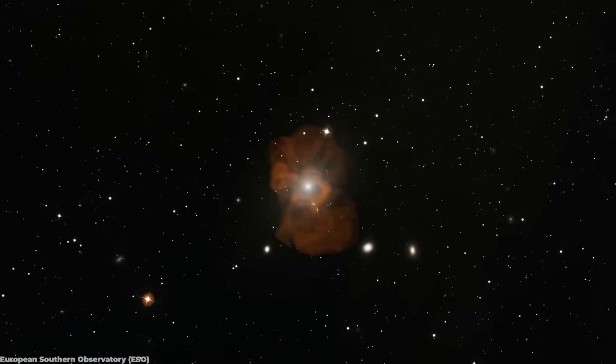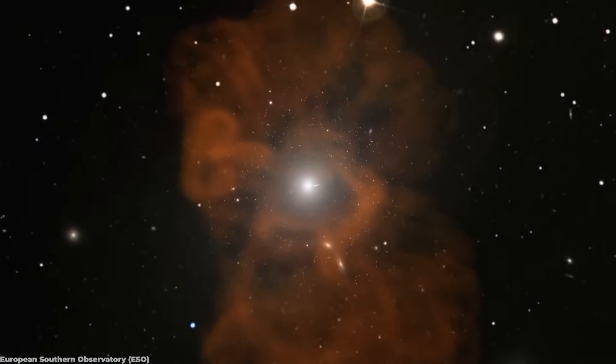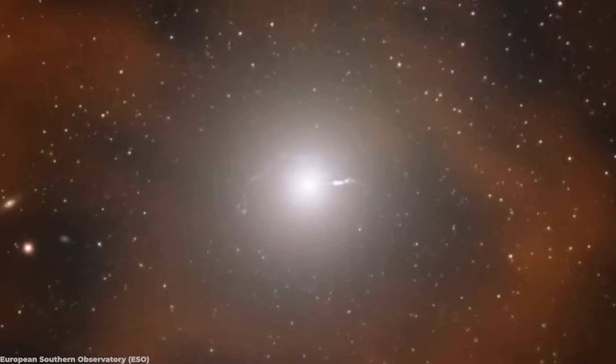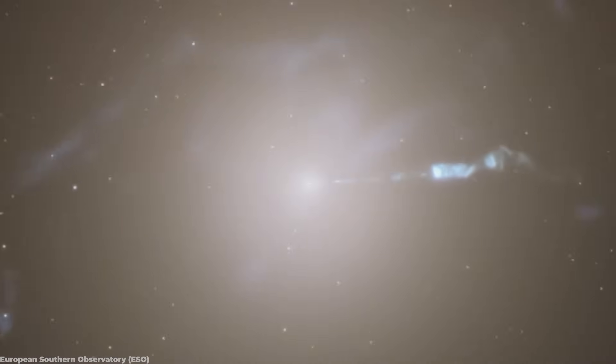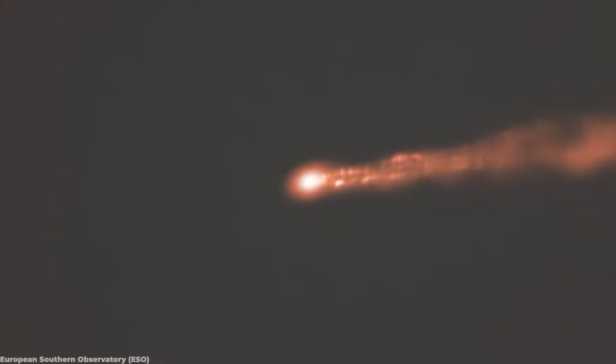This extraordinary achievement involved observing the black hole in the center of the galaxy M87, or Messier 87, specifically focusing on the event horizon, the point beyond which nothing can escape.